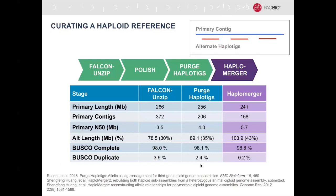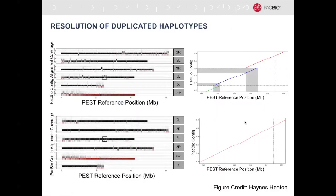Since then, Maura's graduate student Haynes Heaton has run another round of curation with a tool called HaploMerger, which identifies high-identity partial contig alignments and merges contigs together, resecting one of the duplicate haplotypes and putting it into the alternate bin. Running HaploMerger boosted the primary contig N50 to 5.7 megabases and really reduced the BUSCO duplicate percentage. Whereas Purge Haplotigs removes single full-length contigs, HaploMerger can remove partial contigs that have duplicated haplotypes.